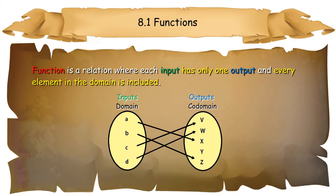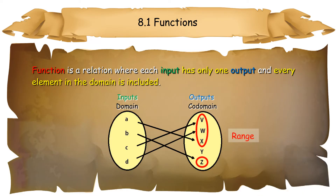Domain: In a function, it is the set of all possible inputs. A possible output of a function is called the codomain, or image of a function. The actual output of a function is called the range.